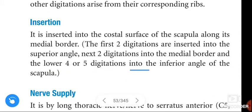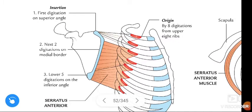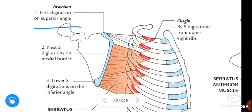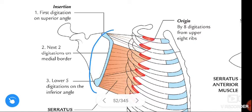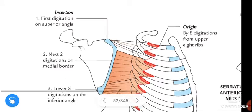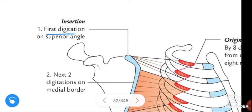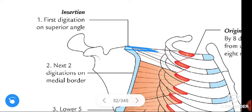See this figure — this represents the insertion of the Serratus Anterior. The red indicates the origin and the blue indicates the insertion. The first two digitations are inserted on the superior angle of the scapula.